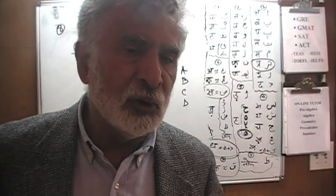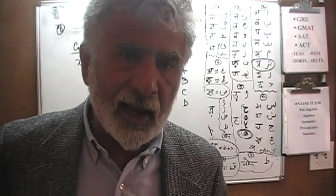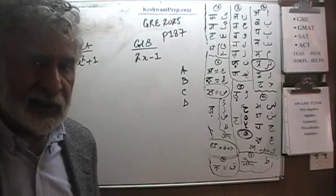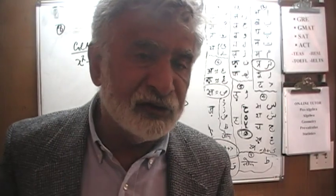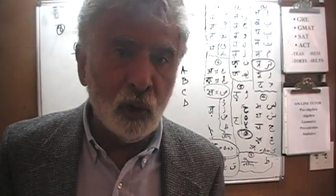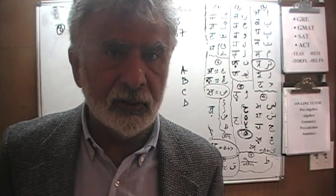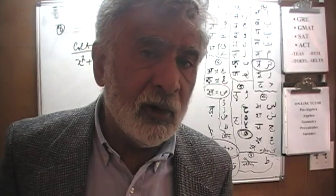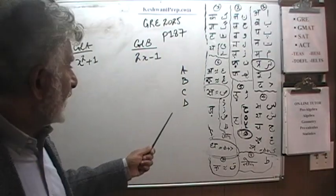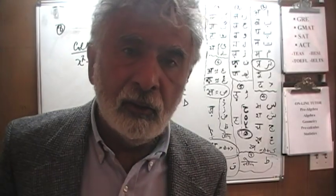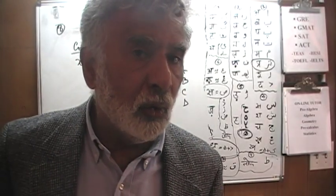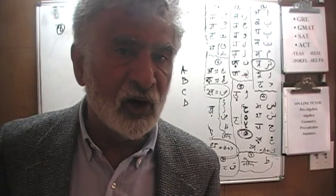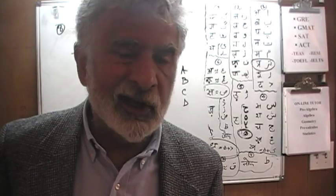Let me redo it. We have to pick the quantity in column A if the quantity in column A is such that it is always greater than quantity in column B. We pick answer choice B if the quantity in column B is always, always, always greater than what we see in column A. And we have to pick answer choice C when these two quantities are always, always, always equal to each other without exception.